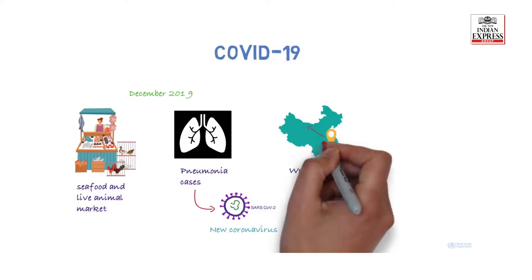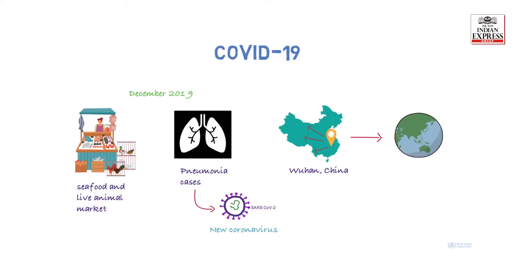COVID-19 spread within China and to the rest of the world. On 30 January 2020, the World Health Organization declared the outbreak a public health emergency of international concern.